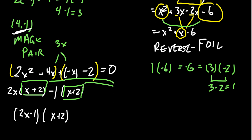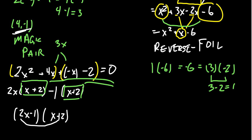And this gives us the factorization. This is what we mean by this reverse FOIL method — you look for a magic pair and then factor by groups to finish this off. And if you have any doubt if this is the right factorization, work it out again. Two x times x is x squared. Negative one times two is negative two. And then two x times two is four x. Negative x, which adds together to give us three x.